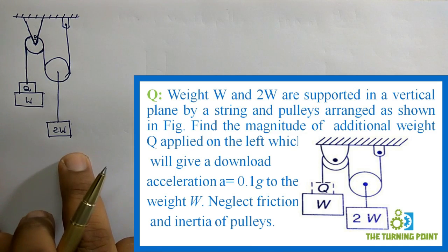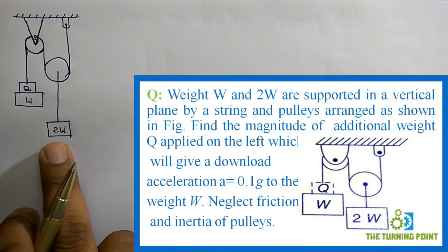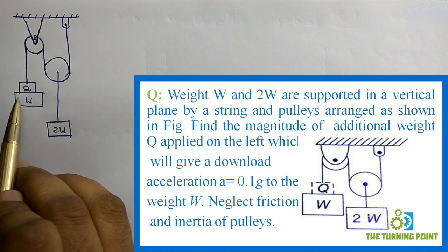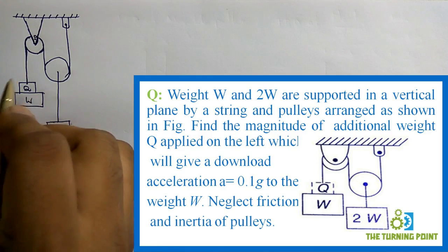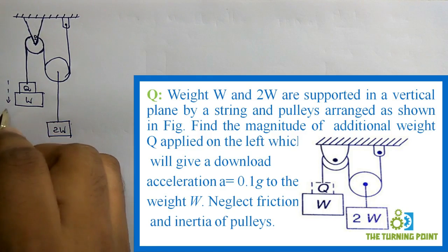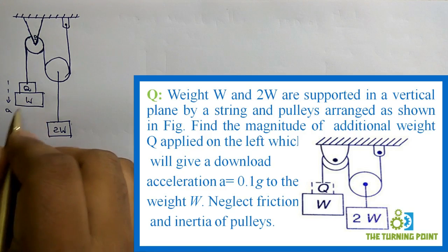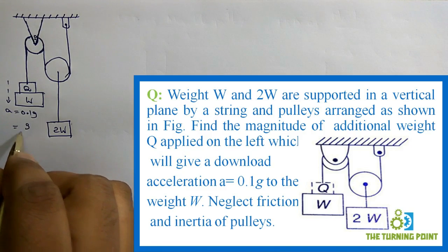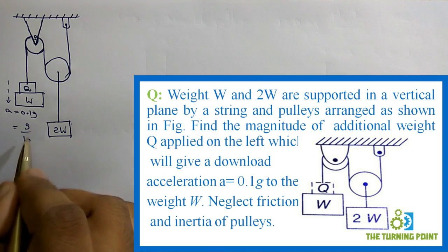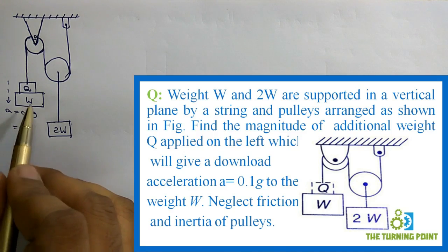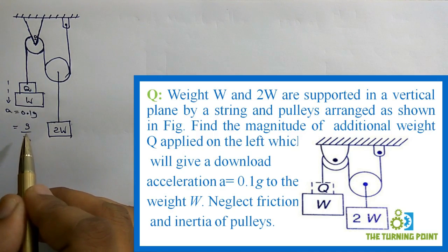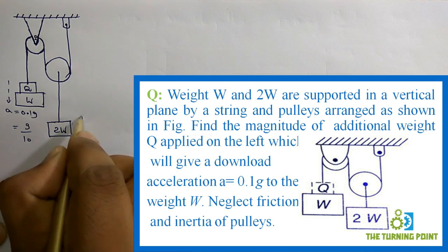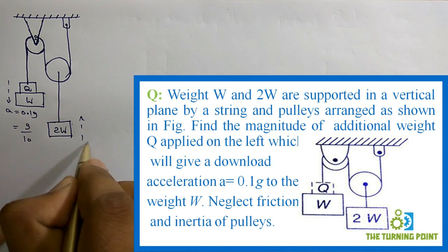This is the given figure. Initially there are W and 2W blocks only. When an additional weight Q is attached on the left, it will have a downward acceleration A equal to 0.1g, which can also be written as g/10. When this block moves downward with acceleration A, the other block moves upward with acceleration A by 2.